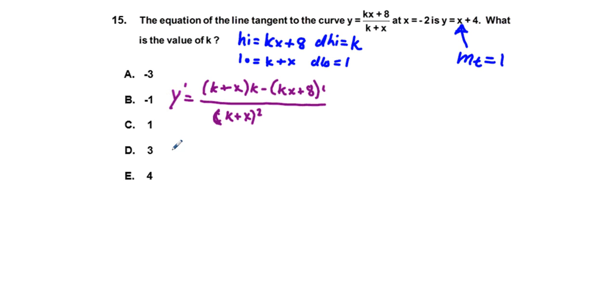Let's go ahead and simplify. y prime is equal to, we're going to distribute up top, we're going to have k times k, which is k squared, and k times x, which is kx. We're going to have minus kx, and minus 8, all over quantity k plus x squared. There's going to be a cancellation available to us here, which is kx minus kx, so that'll just go away.